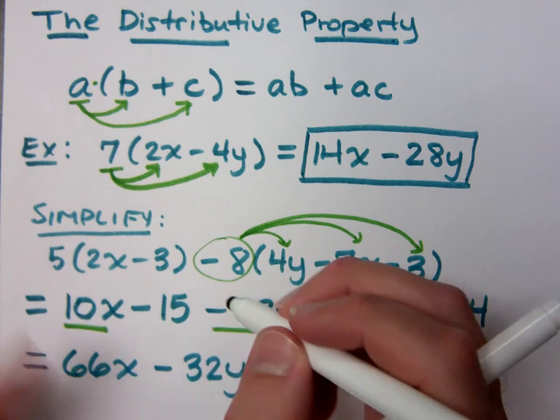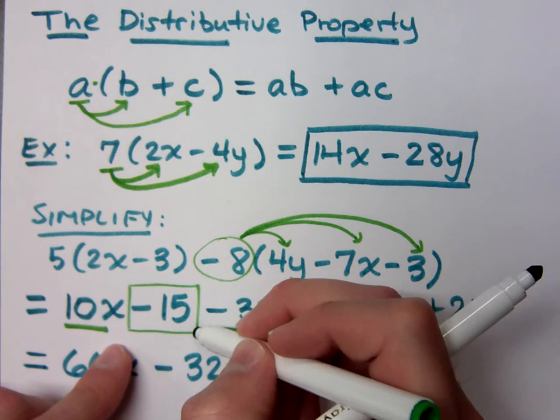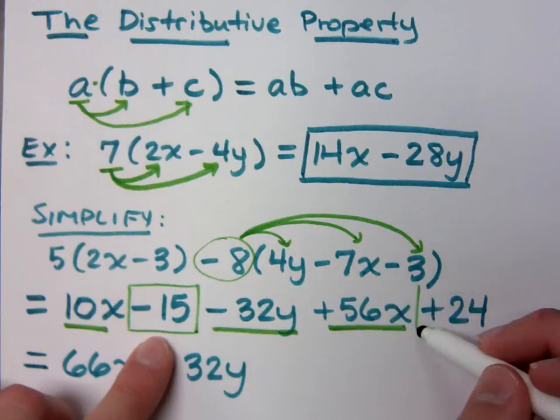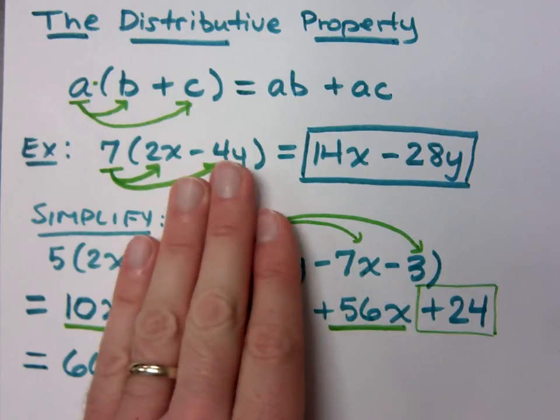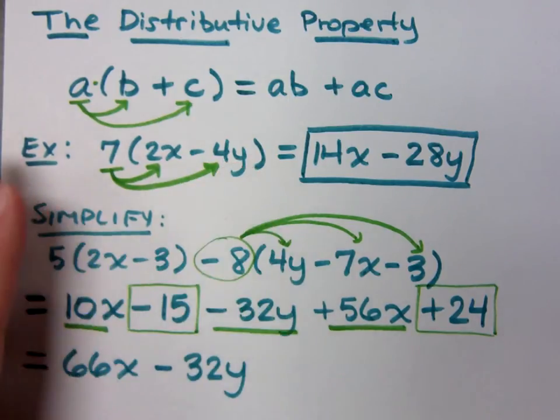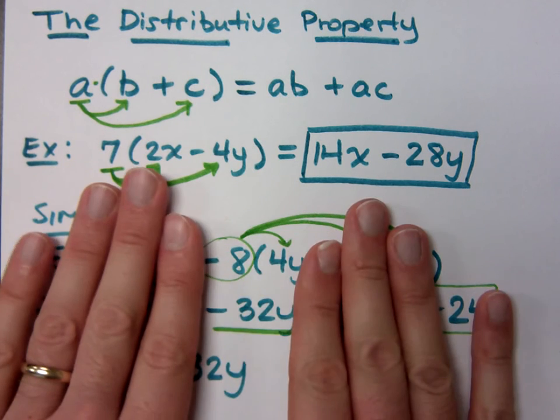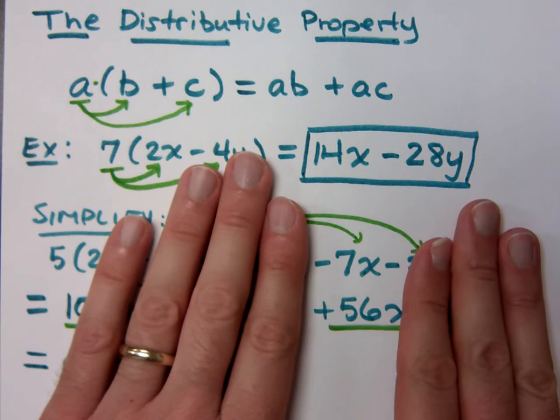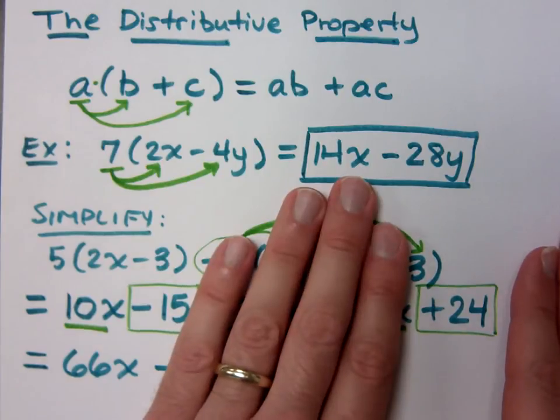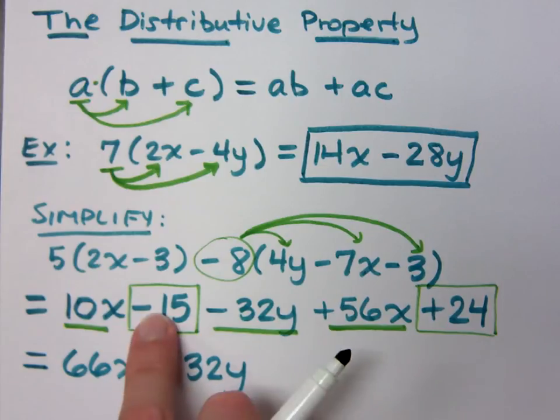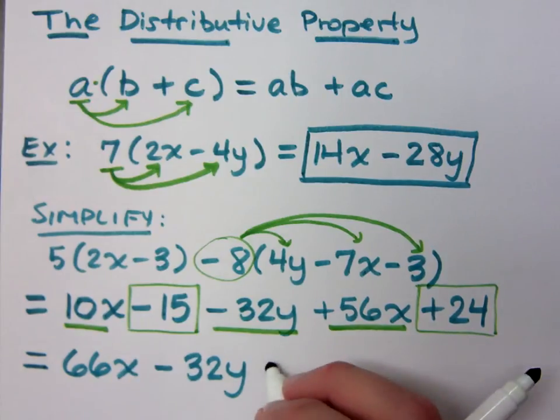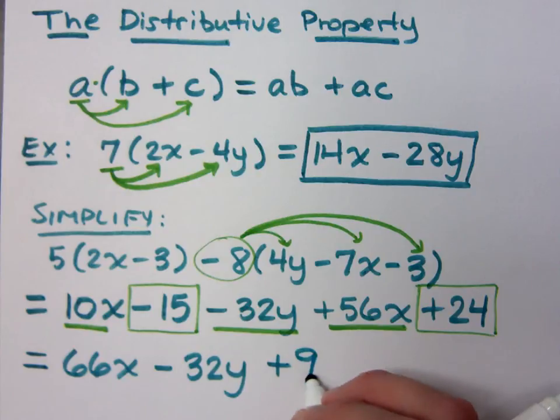I have a plus 15. I've got a negative 15 right here. And what else do I have? Plus 24. So you have to be able to see what the terms are. Like this is a positive 10x. And you go to a negative 15, a negative 32y, positive 56x, and a positive 24. So when you combine these, you know what's going on. A negative 15 and a positive 24 is what? It's positive 9.